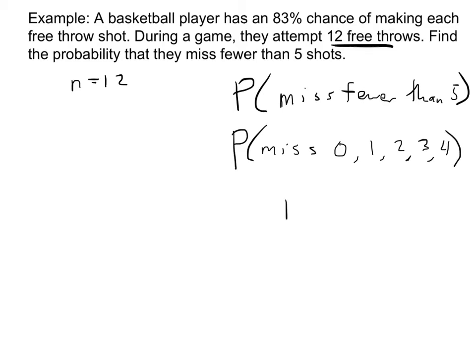So is this a PDF problem, or is this a CDF problem? Well, it could be a PDF problem. You could do the PDF with an x value of 0, then of 1, then of 2, then of 3, then of 4, and manually add them all together. But that would be annoying. This is exactly what CDF does. CDF is supposed to add up 0, 1, 2, 3, 4. It adds all the way up into whatever x value you give it.